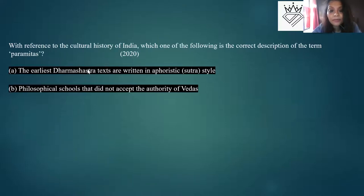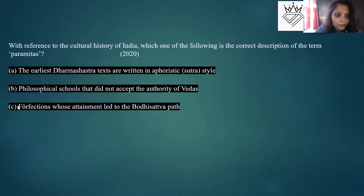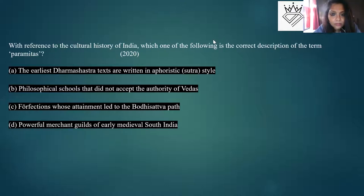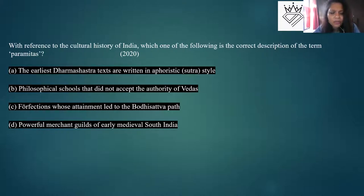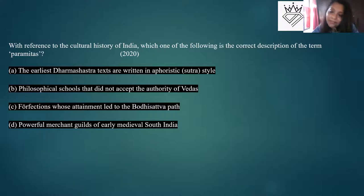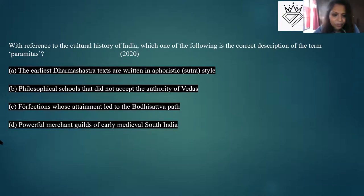For terms like 'paramitas' — related to Buddhism and the Bodhisattva path — try looking for the root word. 'Paramita' basically means someone who has achieved a kind of perfection. If a term is prominent enough, it would have been written in your culture book or other source. If it appears in your NCERT under any context, build on that. That's how to go about with terminologies — always try looking for the root word.